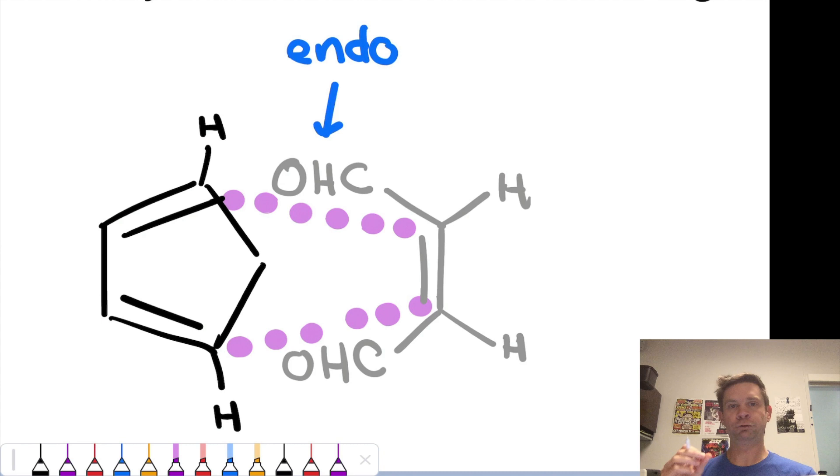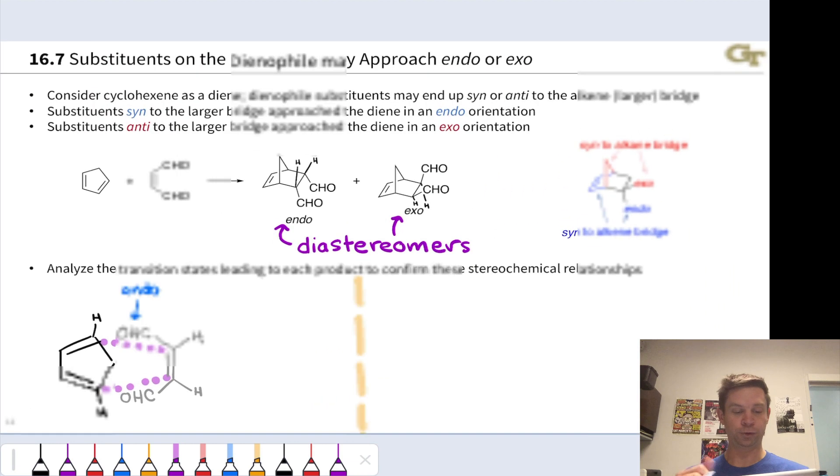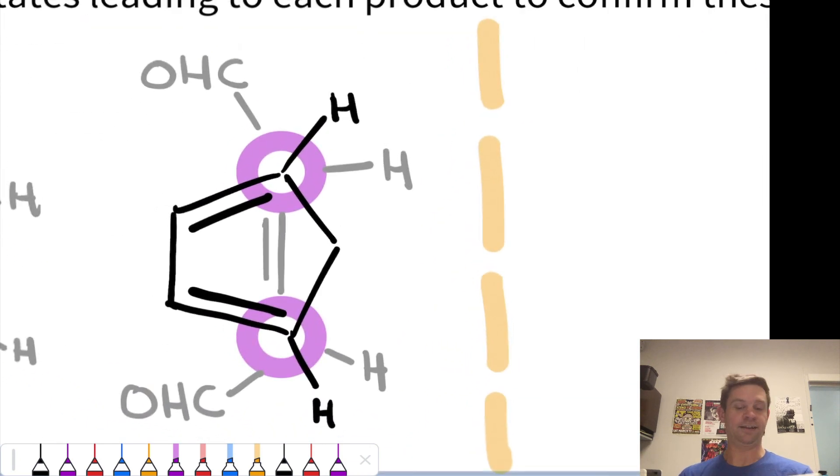Now let's look at this from a Newman projection perspective where we're actually looking down these newly forming bonds, which are these purple dotted lines. We get a Newman projection where we're looking down two bonds at once, both of those purple dotted lines, and it looks like this. So the purple circles indicate where bonds are forming.